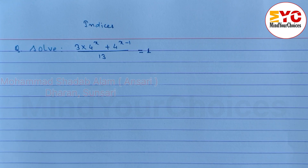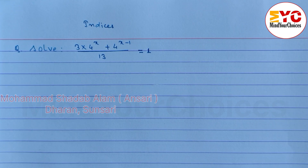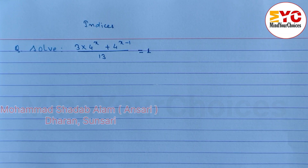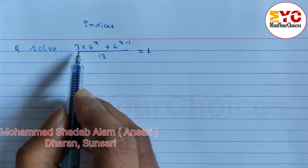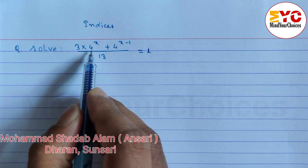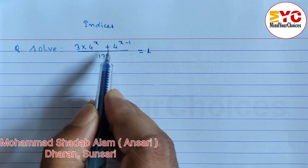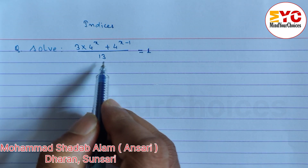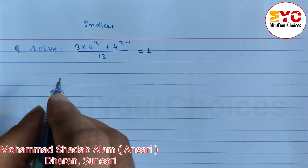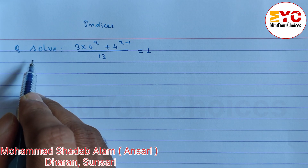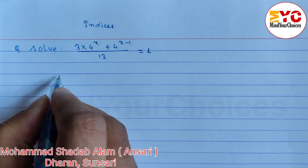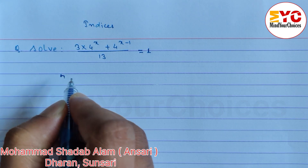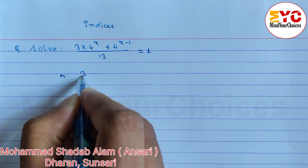This is a Class 10 indices question worth 3 marks. The question is: 3 into 4 power x plus 4 power x minus 1, divided by 13, is equal to 1. We need to solve this to find the value of x.